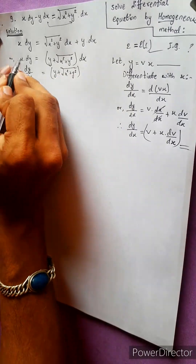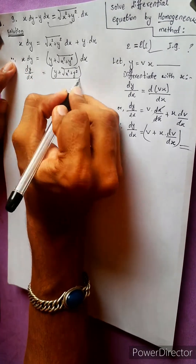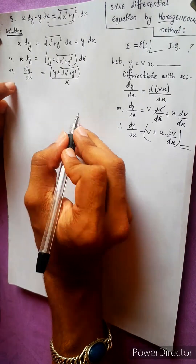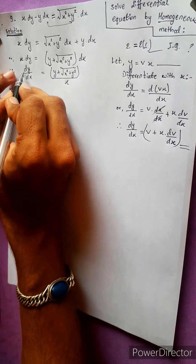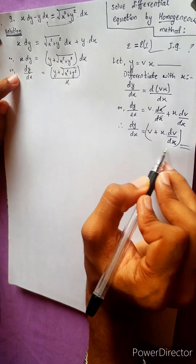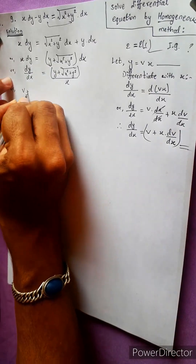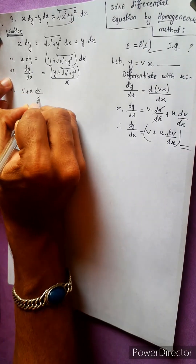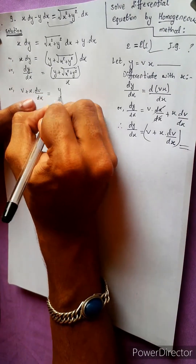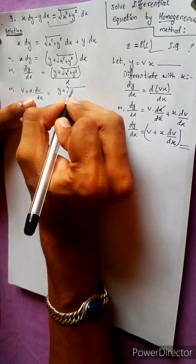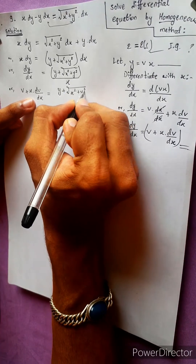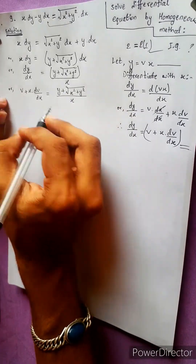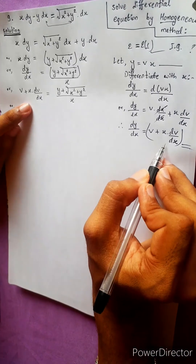And dy by dx — this is where it comes in. We are going to replace it: v plus x dv by dx equals to x squared plus y squared divided by x.